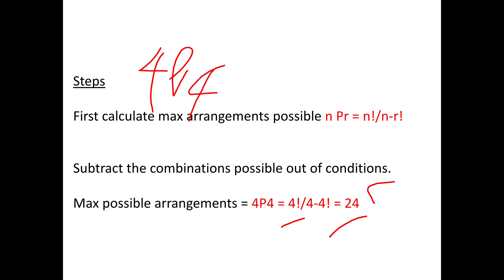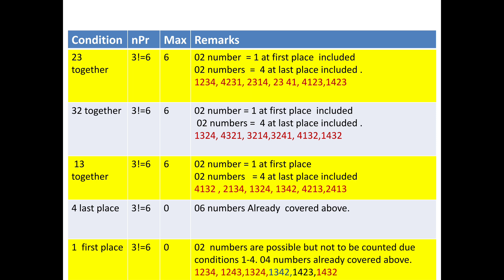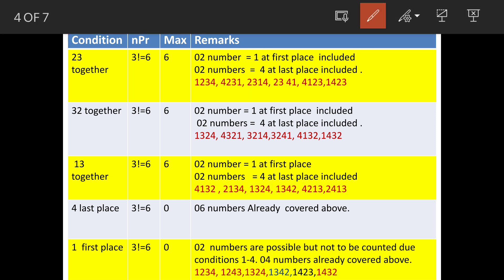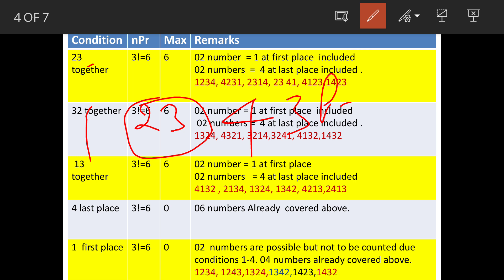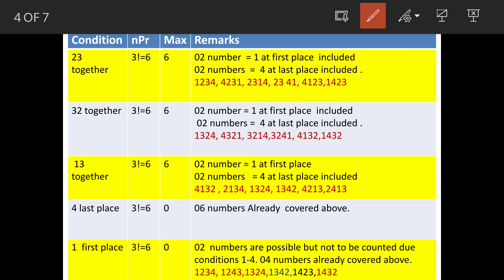We have to subtract the numbers removed due to the given conditions. When 2 and 3 cannot be together, we consider 2,3 as 1 combined entity along with 4 and 1 — giving us 3 entities total. So total arrangements possible are 3P3, which equals 6. Similarly, 3,2 cannot be together, so another 6 such arrangements are possible. These 12 are to be subtracted from 24.